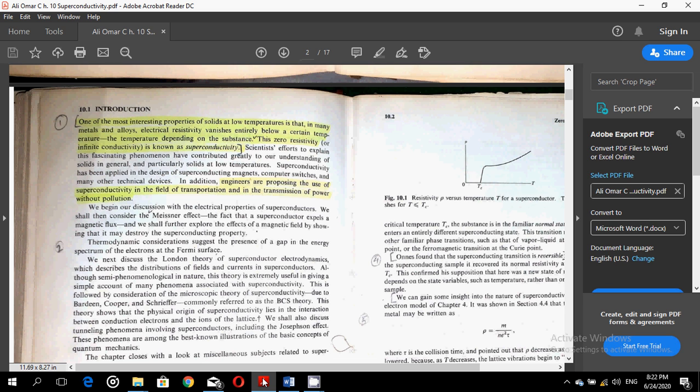This theory shows that the physical origin of superconductivity lies in the interaction between conduction electrons and the ions of the lattice. We shall also discuss tunneling phenomena involving superconductors and superconductors, including the Josephson effect. These phenomena are among the best-known illustrations of the basic concepts of quantum mechanics.